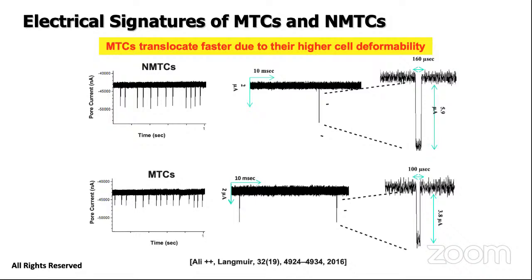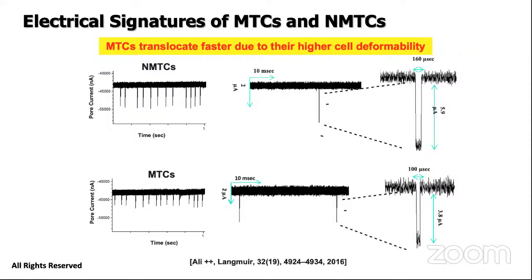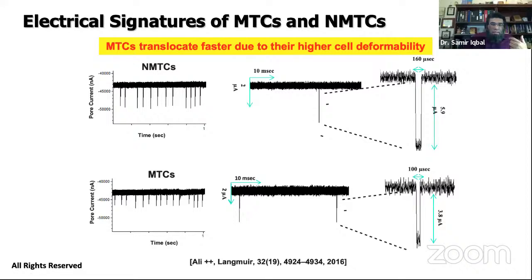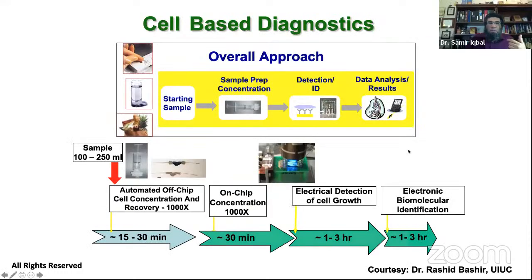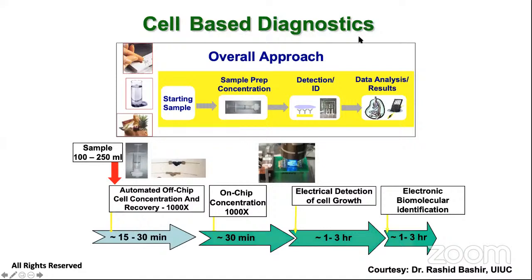Follow-up question: Can normal cells also pass through the micropore? Response: Yes, we have data on normal cells versus cancer cells — they show dramatically different behavior. We do off-chip sample preparation before running through the micropore, so we know the composition of what we're running. Normal cells show very different behavior from cancer cells, and within cancer cells, metastatic cells show different behavior from non-metastatic tumor cells.